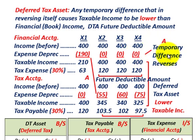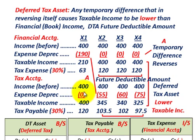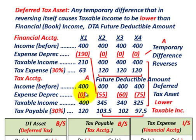This is where we're going to have a temporary difference that reverses itself. For tax accounting, we have the same income of $400,000 each year, but the depreciation expense is zero in the first year. For years X2 through X4, we have depreciation expense spread out over those three years. So for financial accounting we recognized the entire expense in year one, while for tax accounting nothing is recognized in year one, but an amount is recognized evenly over the next three years.